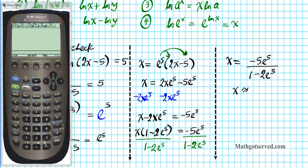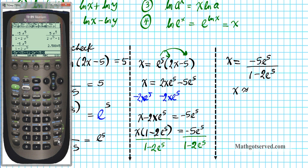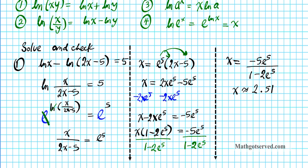To confirm, let's use our calculator to find the approximate value of this expression. Entering negative 5e to the fifth divided by 1 minus 2e to the fifth gives approximately 2.51. So we can clearly see it's a positive value — there are no domain violations. Now we're going to do a check to make sure our answer is in fact correct by plugging it back into the original equation.